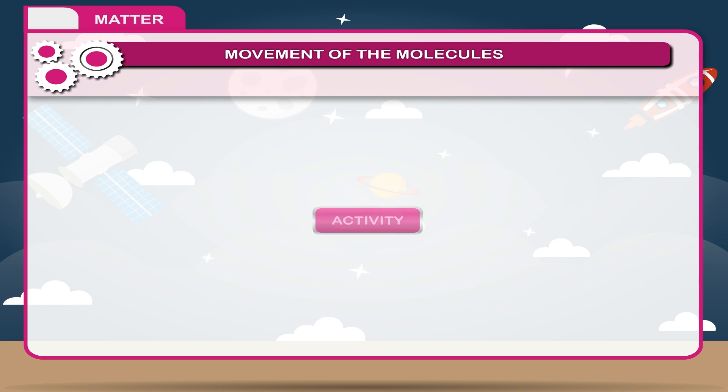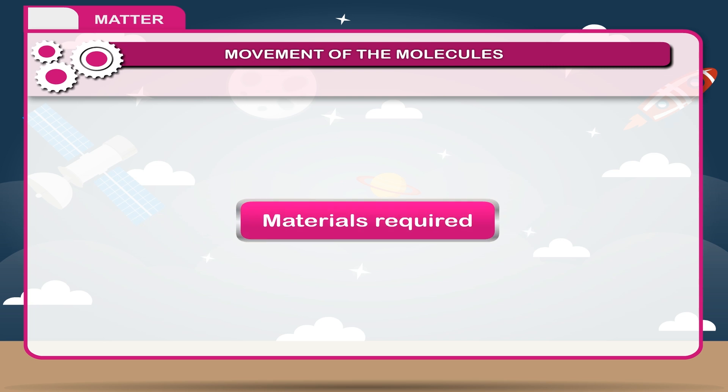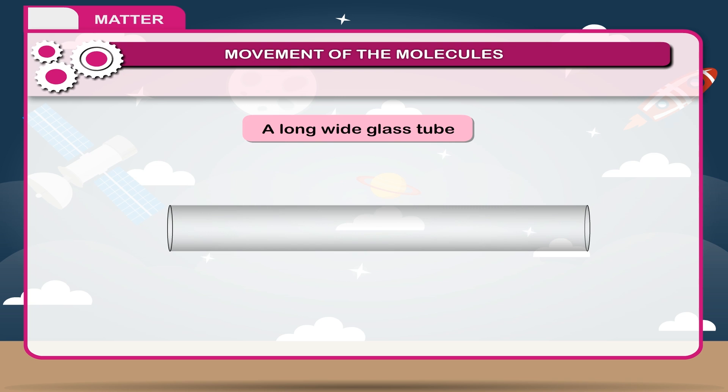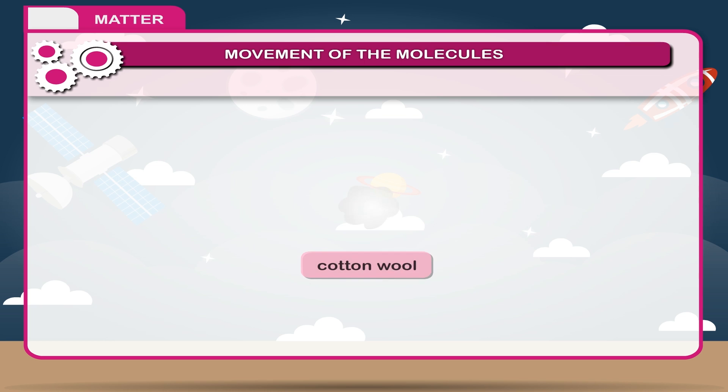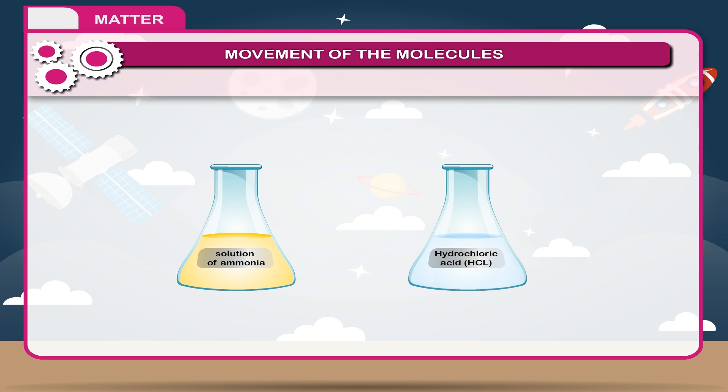Activity: To show Brownian movement in gases. Materials required: A long wide glass tube open at both ends, two corks, cotton wool, solution of ammonia and hydrochloric acid.